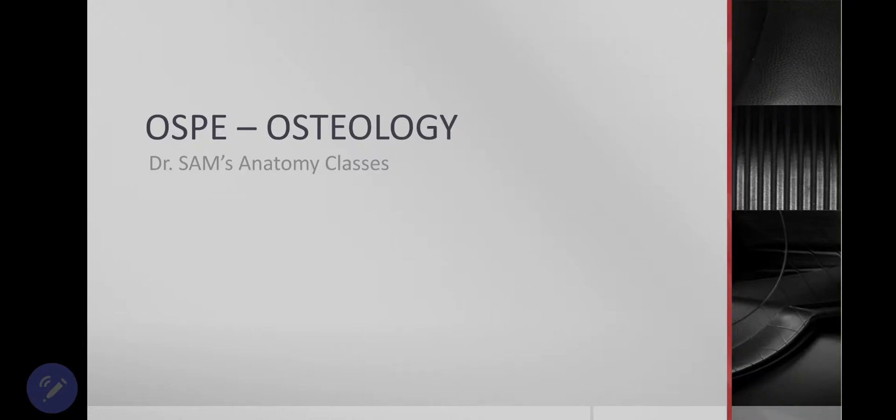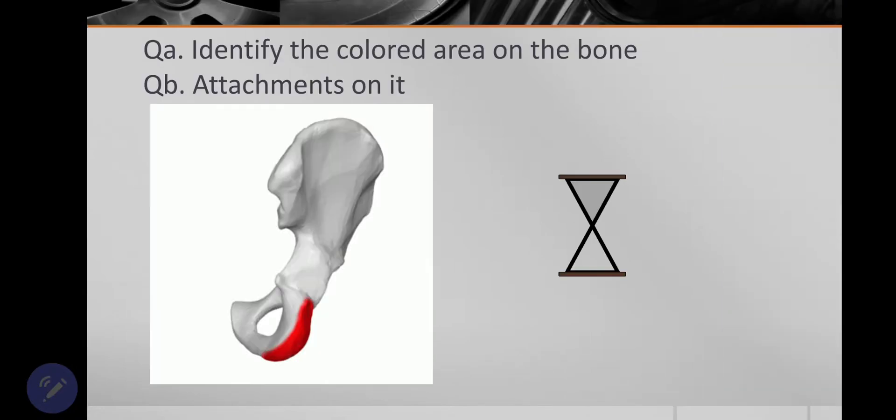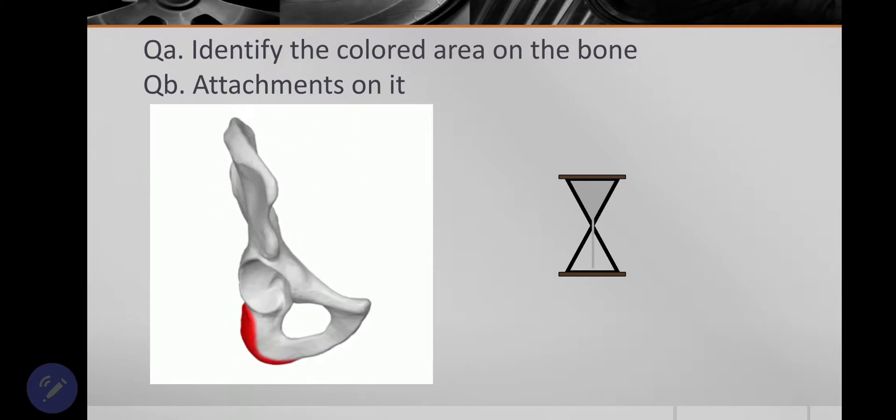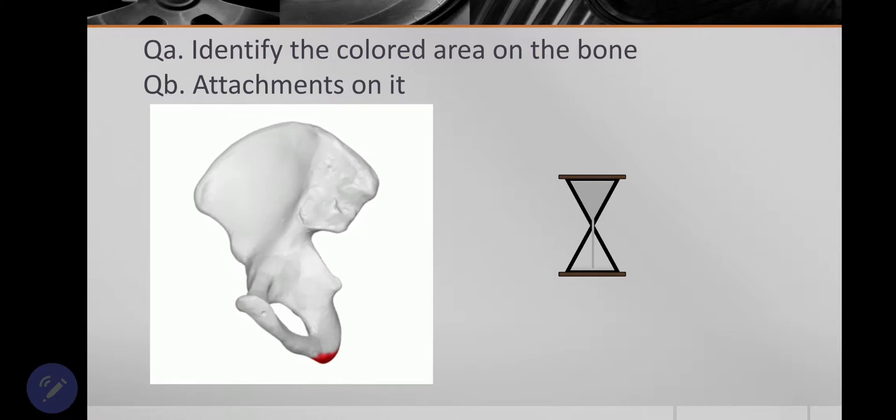Now this is an Os Coxae Osteology. Identify the colored area on the bone and mention the attachments on it.